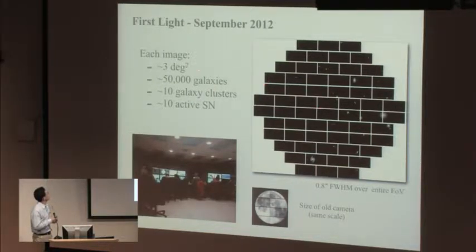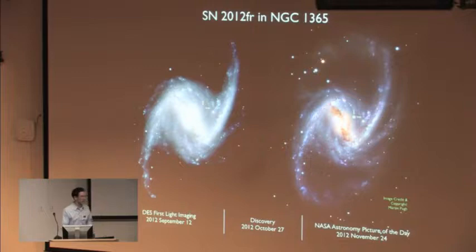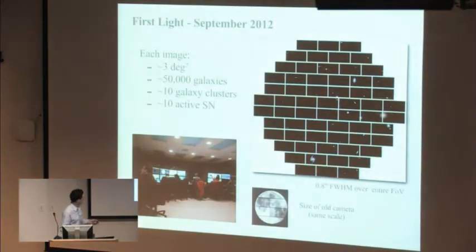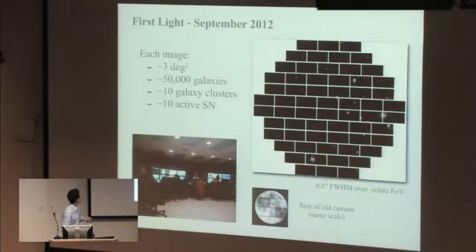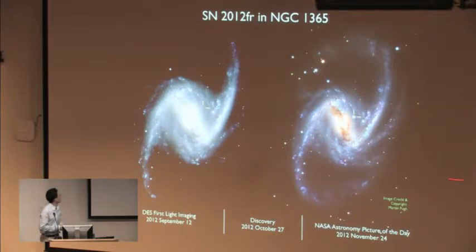This was one of the first images, the official first light image that we took. On the first image we were able to get 0.8 arc second full width half max over the entire field of view. It's a gigantic camera compared to the old one. Each exposure looks like this, three square degrees. Depending on where you look, there's 50,000 to 100,000 galaxies in one exposure.